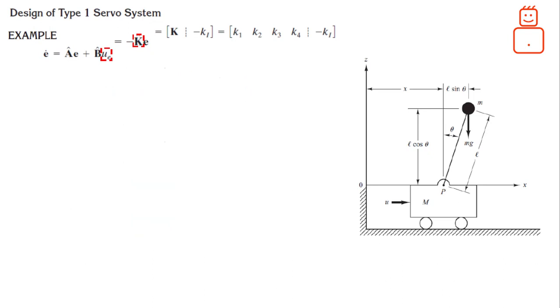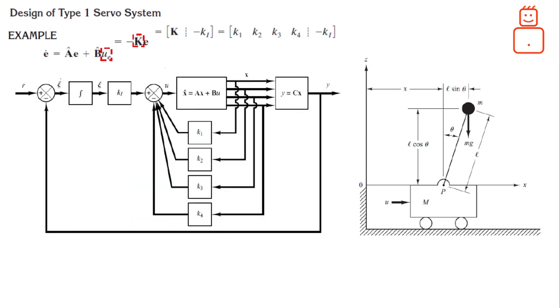This figure shows the structure of our control problem here. Keep in mind that we have fed the position signal Y, which indicates the position of the cart back to the input, and at the same time, we have also inserted an integrator in the feedforward path.